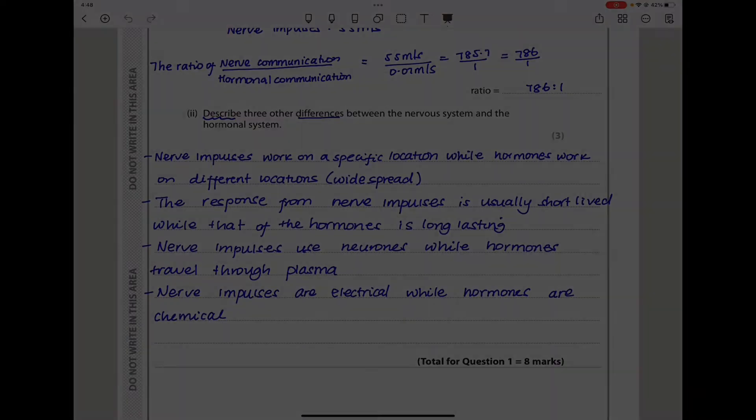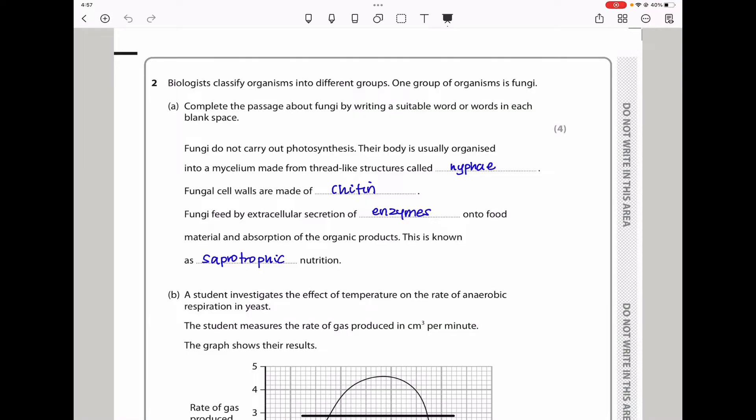Question two: Biologists classify organisms in different groups. One group of organisms is fungi. Complete the passage about fungi by writing a suitable word in each blank space. Fungi do not carry out photosynthesis. Their body is usually organized into a mycelium made from thread-like structures called hyphae. Fungal cell walls are made of chitin. Fungi feed by extracellular secretion of enzymes onto the food material and absorption of the organic products. This is known as sapotrophic nutrition.